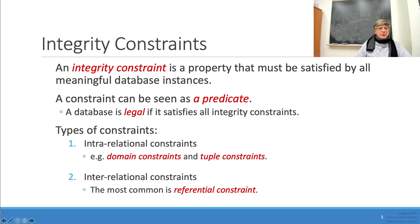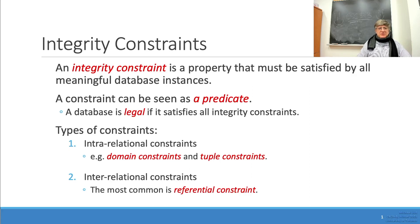In this short video we would like to explain integrity constraints. An integrity constraint is the property that must be satisfied by all meaningful database instances. A meaningful database instance is one where all the tables contain correct information. A constraint is a condition that should be satisfied by data — if we plug in certain data, the condition may be true or false, hence a constraint can be seen as a predicate.